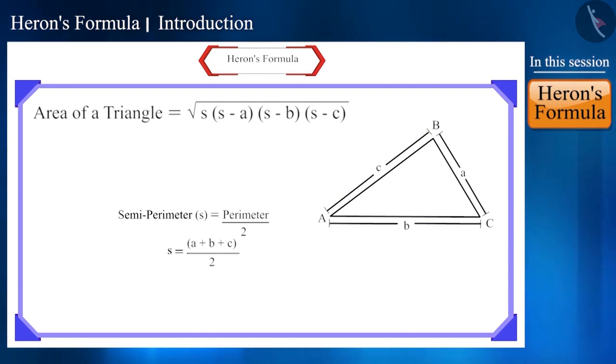And this expression in brackets, S minus A, S minus B, S minus C represents the product of all the terms in parenthesis by subtracting the measurement of all the sides from the semi-perimeter.